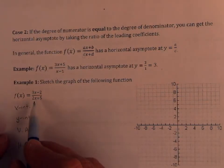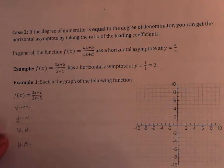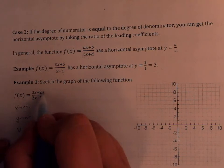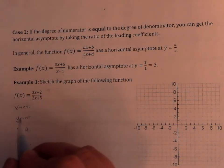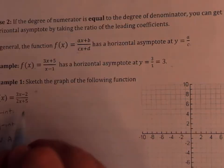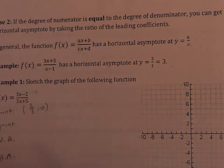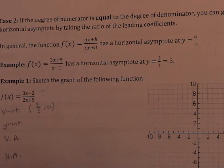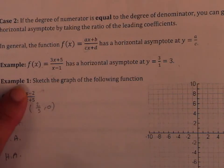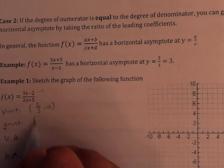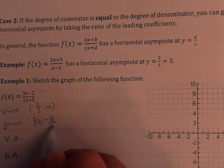For the x-intercepts, you take the zeros of the numerator, which gives you 2 over 3. For the y-intercept, you substitute x equals 0, which gives you negative 2 over 5.